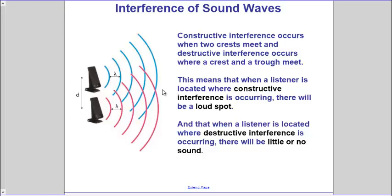As before, we stated that sound waves can interfere with other sound waves — or any wave can interfere with any wave: light, sound, mechanical waves, water waves, and so on. And we know that there are two forms of interference, those being constructive and destructive.